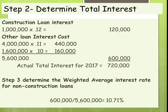For step three, we figure out the weighted average interest rate for non-construction loans. We take the total interest for the non-construction loans and divide by the $5.6 million principal. That tells us our average rate, other than the 12% construction loan, was 10.71%.